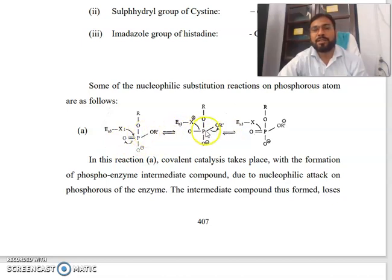These two structures are in equilibrium and this structure is further in equilibrium. In this reaction, covalent catalysis takes place with the formation of phosphoenzyme intermediate compound.